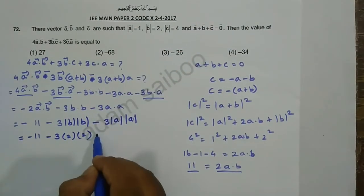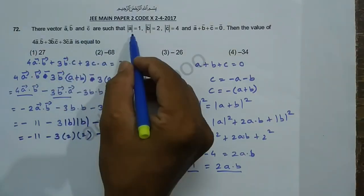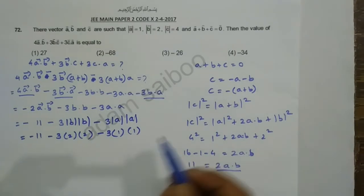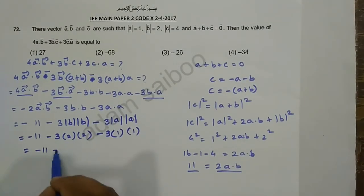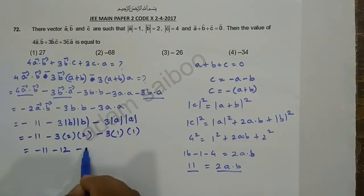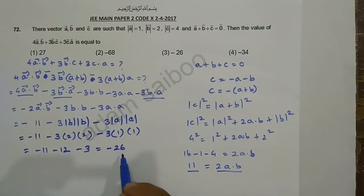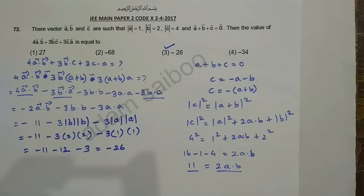So the final result: minus 2 times (11/2) minus 3 times |B|² minus 3 times |A|² equals minus 11 minus 3 times 4 minus 3 times 1 equals minus 11 minus 12 minus 3 equals minus 26. So option 3 is correct.